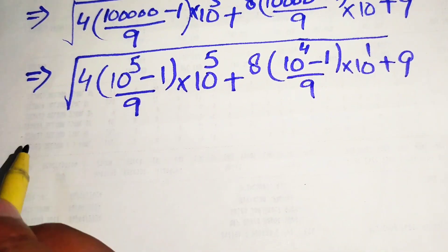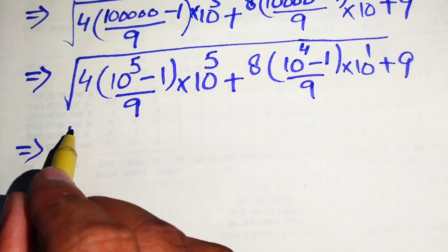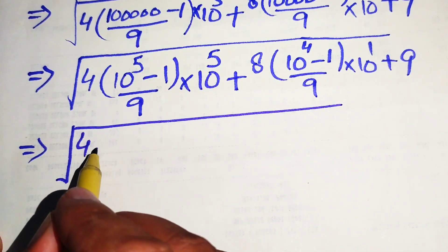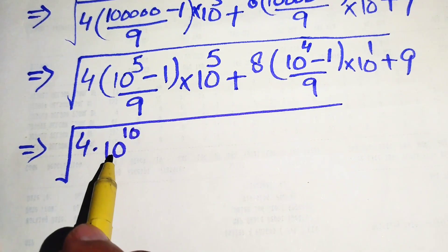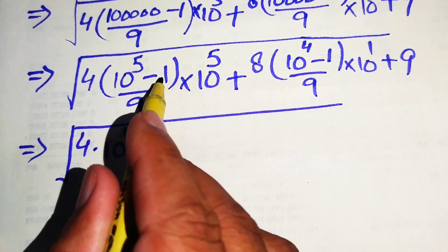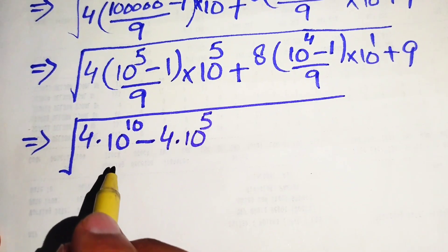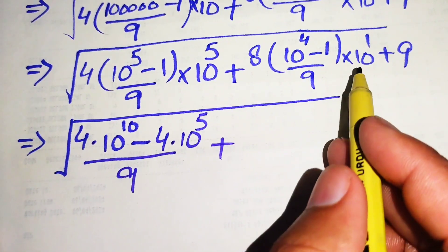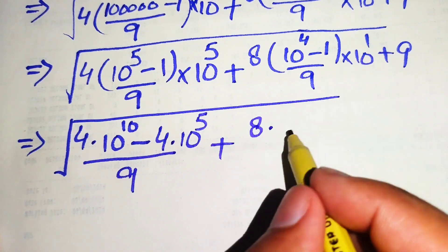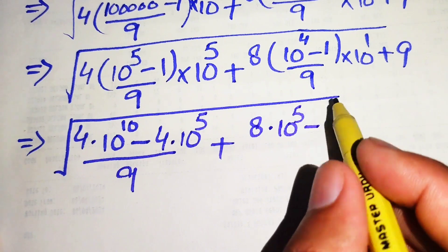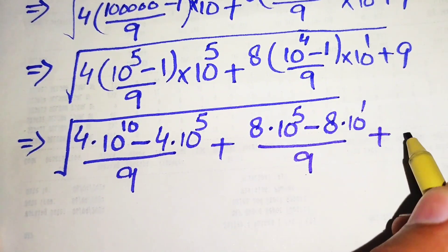In the next step we multiply 10 raised to power 5 and 4 on both numbers, giving us 4 times of 10 raised to power 10. Because 10 raised to power 5 multiplied by 10 raised to power 5 becomes 10 raised to power 10, minus 4 times of 1 equals 4, and 10 multiplied by 1 becomes 10 raised to power 5, all divided by 9. Then we multiply 10 and 8 to get 8 times 10 raised to power 5, minus 8 times 10 raised to power 1, divided by 9, plus 9.